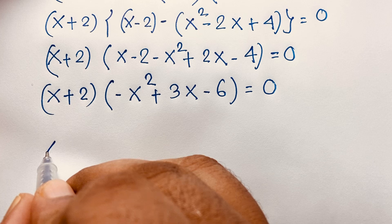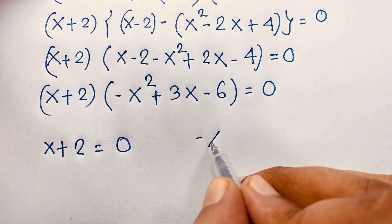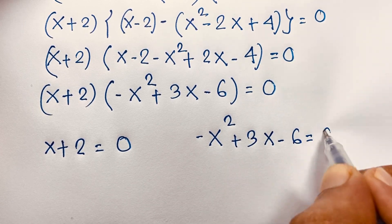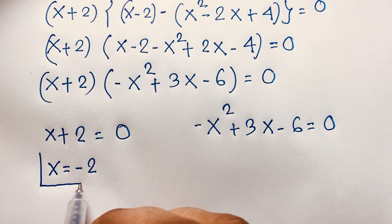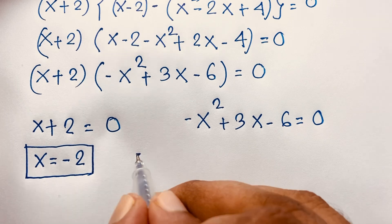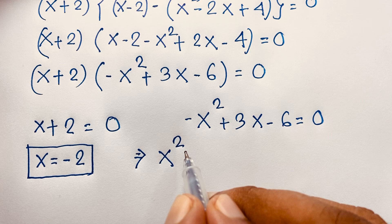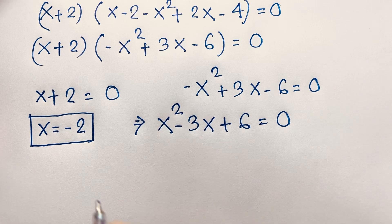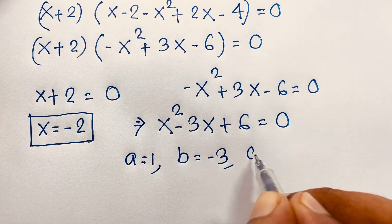Now we find two cases. The first case is x plus 2 equals 0, giving us x equals negative 2 as our real solution. The second case is negative x squared plus 3x minus 6 equals 0. Multiplying both sides by negative 1 gives us x squared minus 3x plus 6 equals 0, where a equals 1, b equals negative 3, and c equals 6.